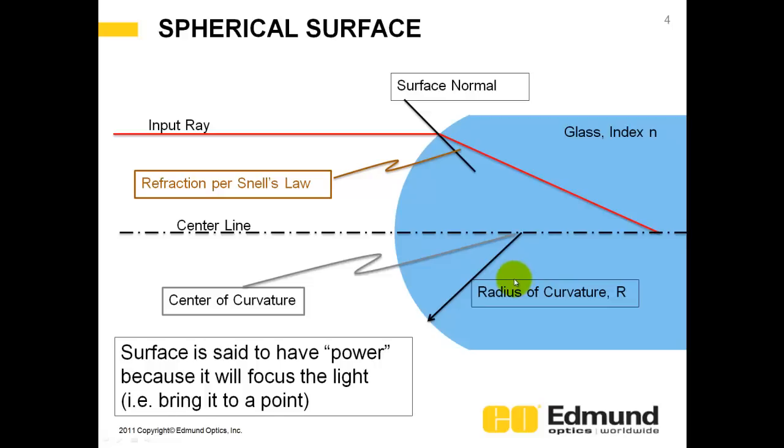And we're not going to do any calculations with it. I'm just showing you what typical variables are used when describing the physics or the phenomenology behind this. So an input ray comes in, and there's going to be a surface normal of this glass right here. And this light ray is going to refract per Snell's Law, and this refraction angle here is going to follow, again, Snell's Law.